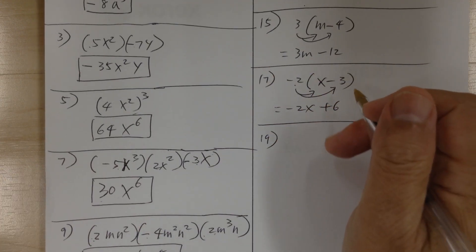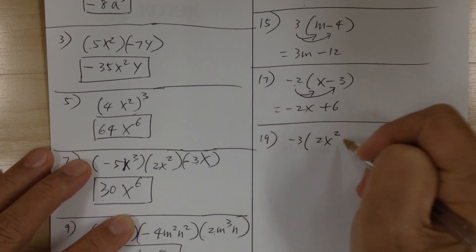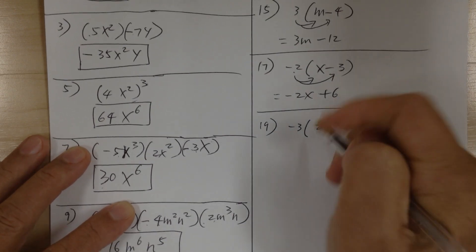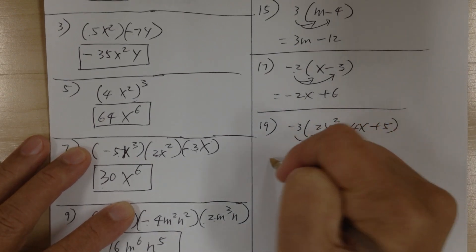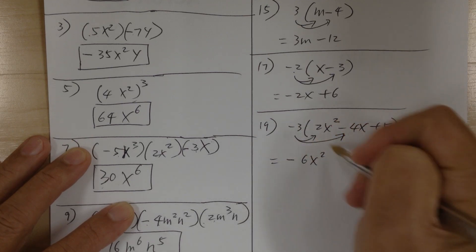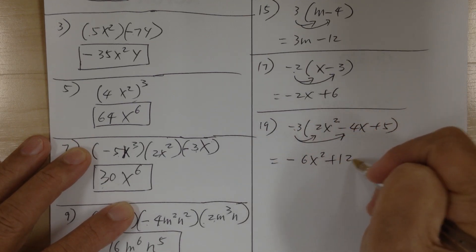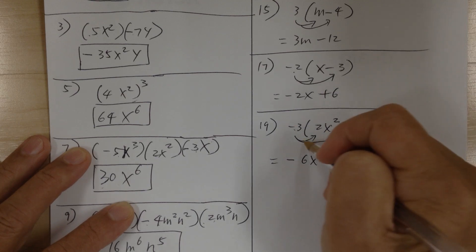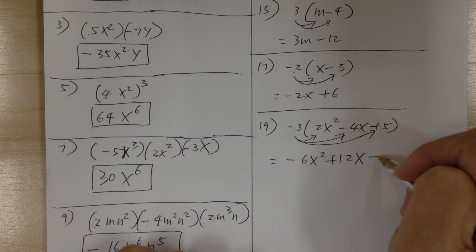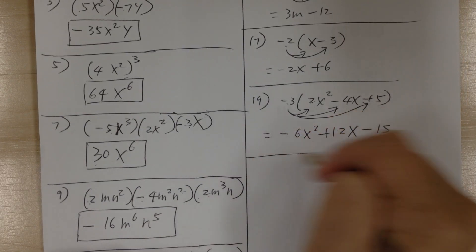Number 19. You have negative 3 times (2x squared minus 4x plus 5). Distribute: negative 3 times 2x squared gives negative 6x squared. Then negative and negative is positive: 3 times 4 is 12, so plus 12x. Then negative 3 times positive 5 is negative 15.